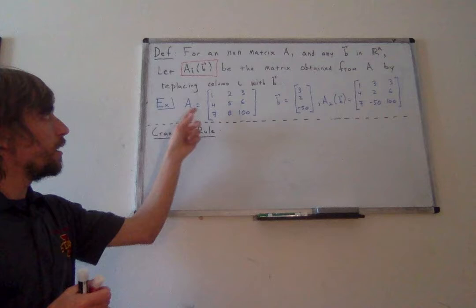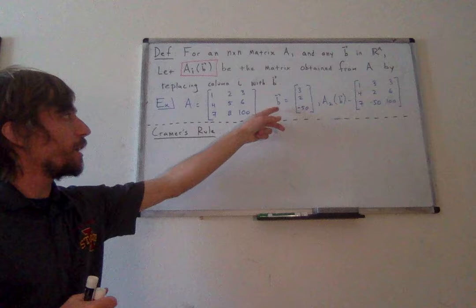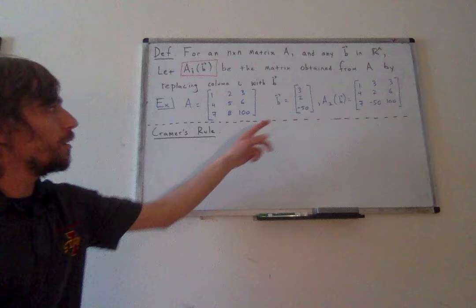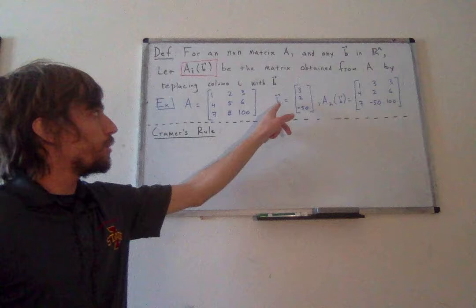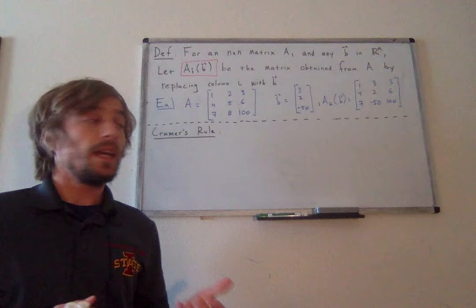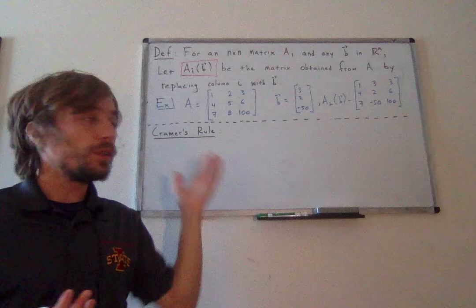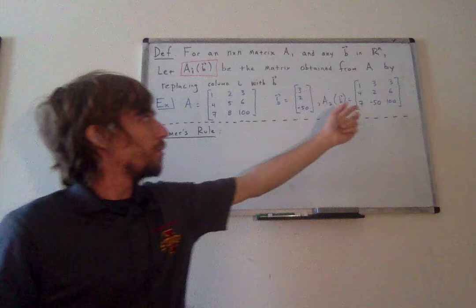Here I've got the matrix with entries 1, 2, 3, 4, 5, 6, 7, 8, 100, and the vector B = [3, 2, -50]. The matrix A sub 2 of B means I replace column 2 with B. It's just an n by n matrix with a vector B whose length corresponds to the number of rows in A, and all you do is replace column 2 with B.